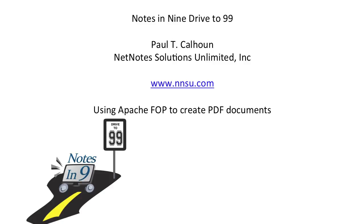Hello, this is Paul Calhoun with NetNotes Solutions Unlimited, back again for Notes at 9, Drive to 99. In this installment, we're going to talk about using Apache FOP to create PDF documents. I wanted to give you a bit more information about what Apache FOP is and one of the reasons I'm looking at it as an alternative. Traditionally, one of the premier go-tos for creating PDF documents was the iText library. One of the concerns over the past 12 to 24 months is that iText changed their licensing — it's no longer really free and open source. While you can still find some of the older free and open source iText libraries, they haven't been updated, so they're not the latest and greatest or necessarily the most performant.